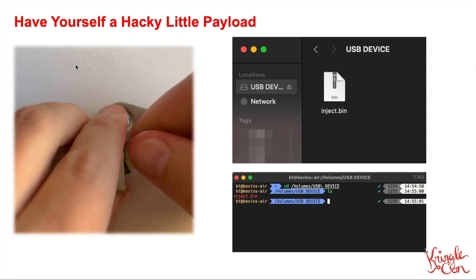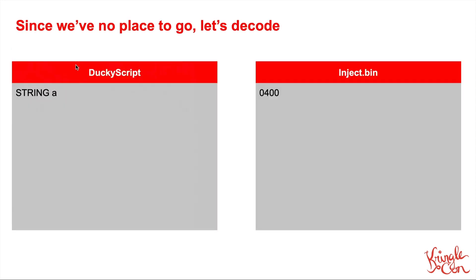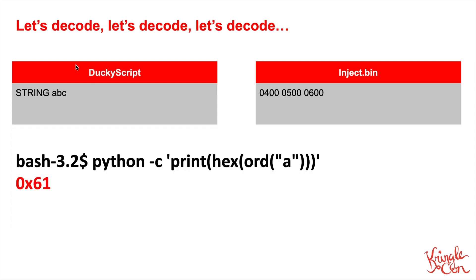You can grab the inject.bin off of the device for later analysis. If you're on Mac, you can just CD into /Volumes and then the USB device. Or if you're on Linux, it's going to get mounted in the /mnt directory off your root. Let's look at how the ducky script gets encoded into an inject.bin file and see if we can figure out how it works. On the left side we have the ducky script of string A — all it's going to do is type the letter A — and when we use xxd to look at the inject.bin, all you see is 0x04 0x00.